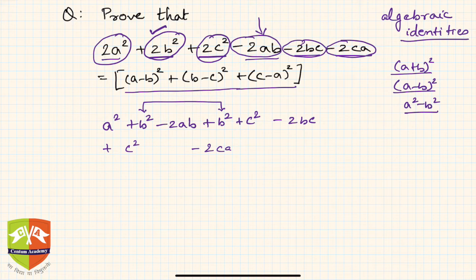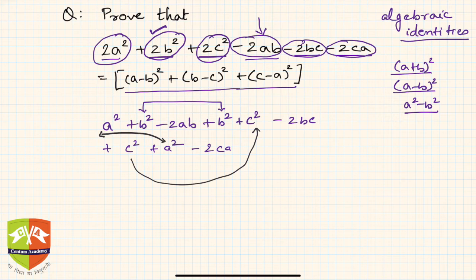In the given expression, this a² plus that a² becomes 2a² — that's accounted for. This c² and that c² becomes 2c² — also there. And the two b² terms give us 2b². All original terms are accounted for along with the three cross terms.